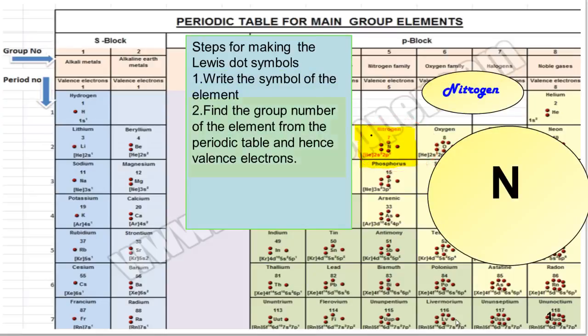The second step is to find the group number so that you can predict the valence electrons. Nitrogen's group number is 5, so it has 5 valence electrons.